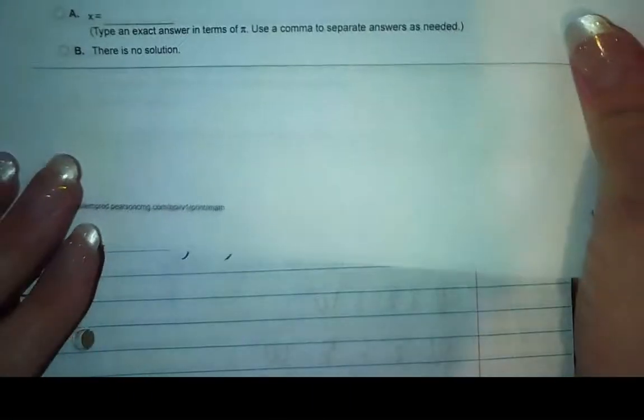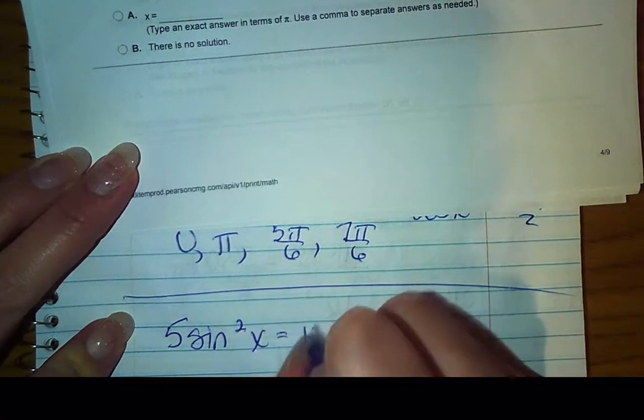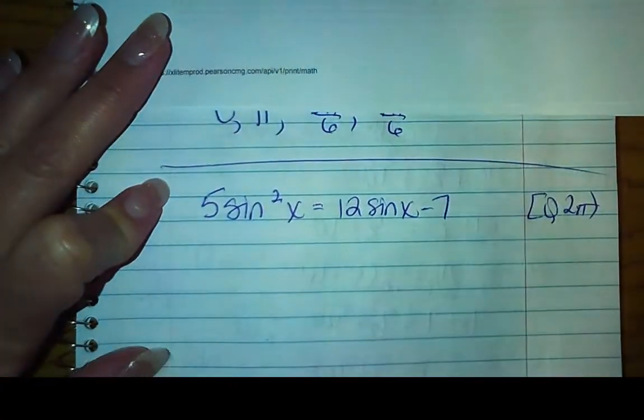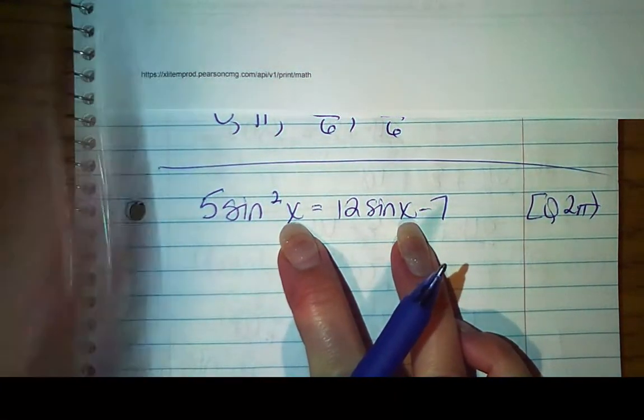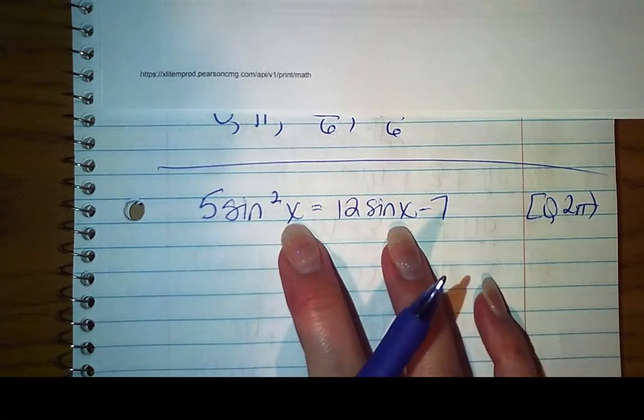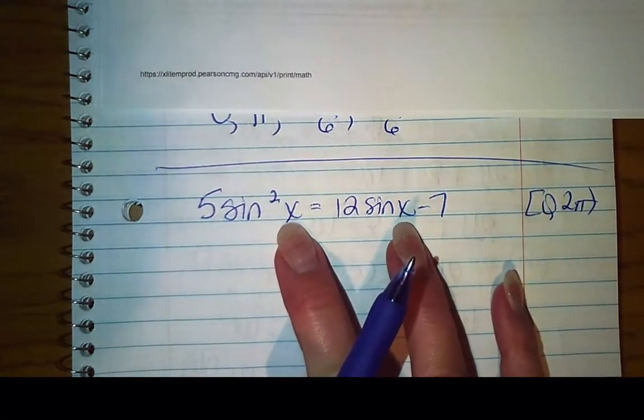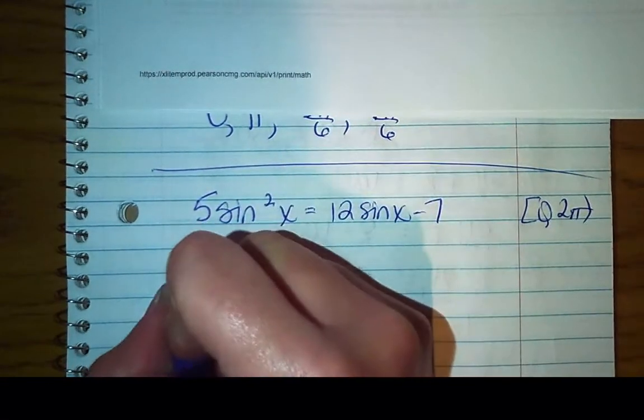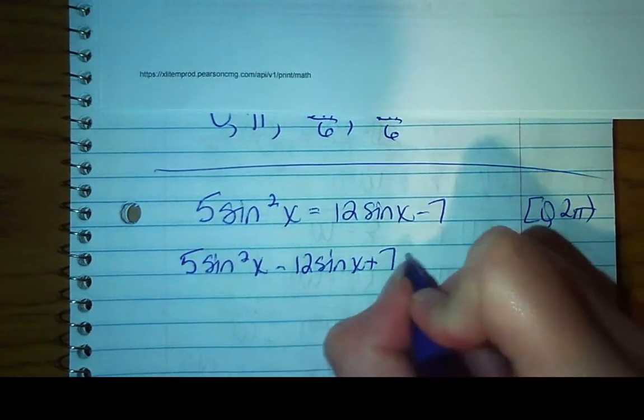And then the last one we've got is 5sin²(x) equals 12sin(x) minus 7. And we're restricted to one lap of the unit circle. Sorry, my handwriting is getting messier. All right, so I see I got something squared. My arguments match, so I'm not going to worry about going into where... I'm not going to worry about trying to use an identity because my angles match. I think that's the first thing I look for is do my arguments match. If they do, I'm going to try to avoid going to different identities. So I'm going to set this thing equal to 0. So I've got 5sin²(x) - 12sin(x) + 7 is 0.